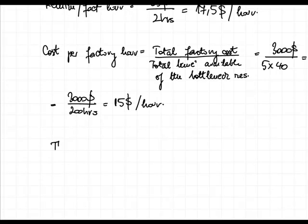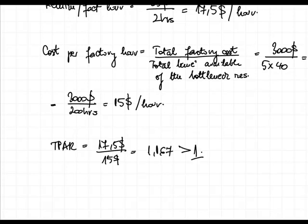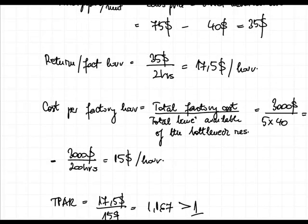The throughput accounting ratio is therefore $17.50 divided by $15, which equals 1.167 — higher than one, so the product is efficient and profitable. Note that whatever is not a direct material cost goes into the total factory cost, and it must be expressed on the same time level as the bottleneck resource time — in this case $3,000 per week divided by the total weekly time available. Adjustments must be made to align both figures to the same time level.